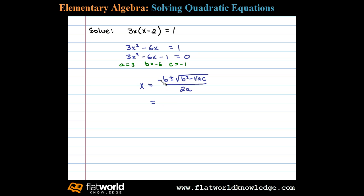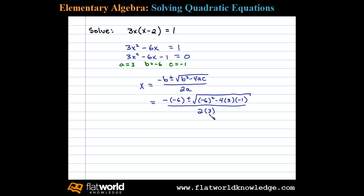Substituting these values in, we have negative b, or negative negative 6, plus or minus the square root of negative 6 squared minus 4 times a, which is 3, times c, negative 1. We're left with 6 plus or minus the square root of negative 6 squared is 36, and negative 4 times 3 times negative 1 is plus 12, divided by 6.